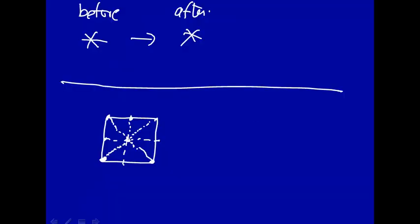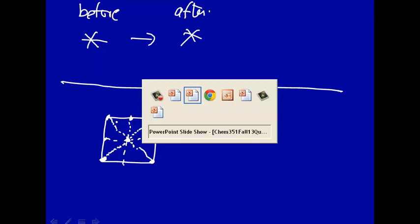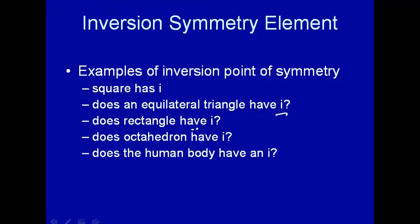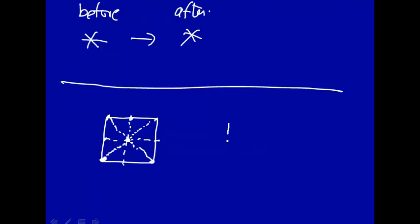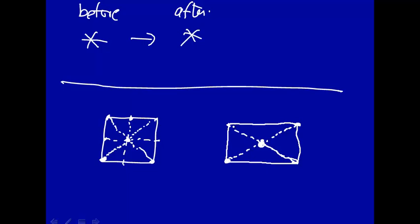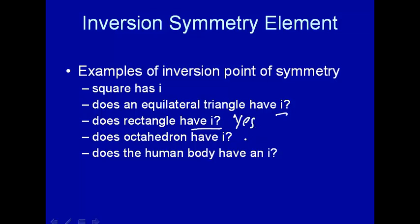Note that the inversion center does not have to be anywhere on the structure itself — so if this represents a molecule, the inversion center is not a particular atom in the molecule. How about a rectangle? Does a rectangle have a center of inversion? If the center of inversion is right in the middle, you take a point, go across and down, and that point will be inverted to the opposite side. So yes, a rectangle does have a center of inversion.